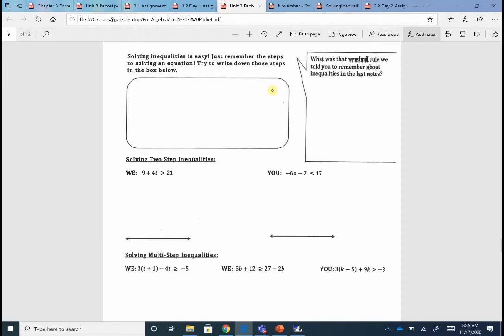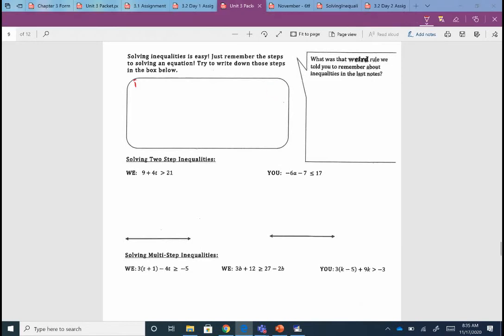So step number one, we always talked about locating the variable. Locate the variable. So where's it at? What variable do we have? We should be on page number nine, should have the first step written down in our box. We just locate the variable, where's it at, what one are we working with? And remember we want to leave the variable alone, we want to clear everything off that side with the variable.